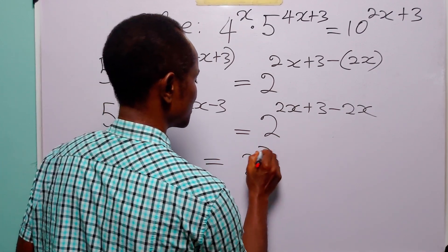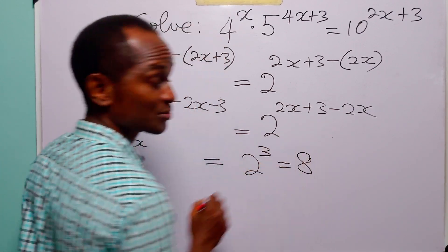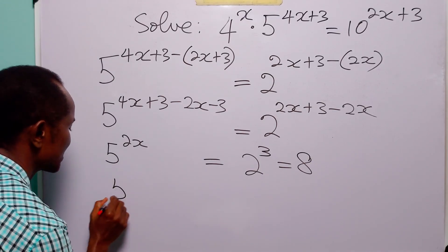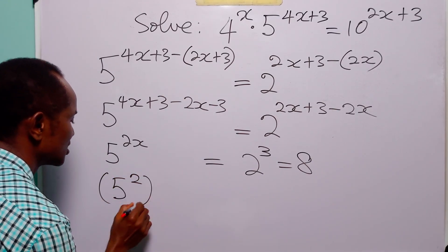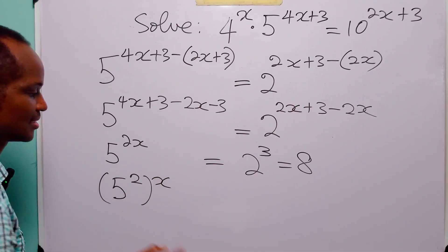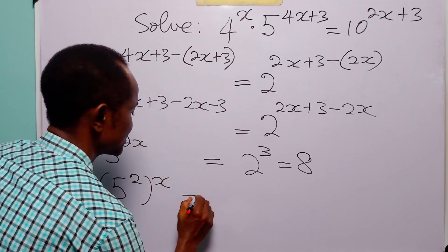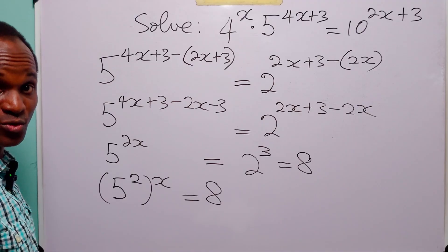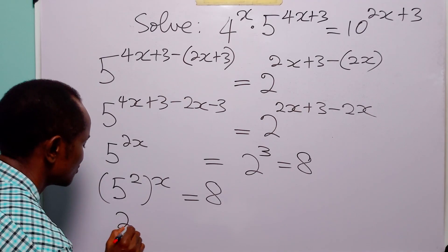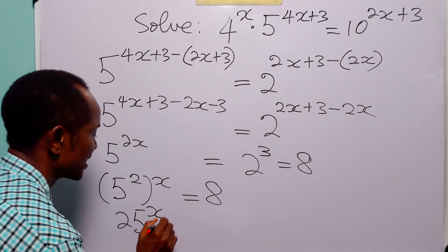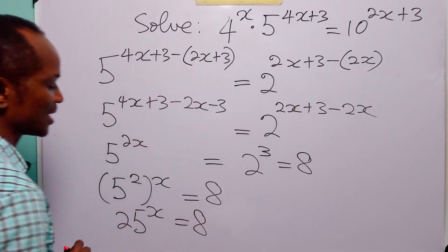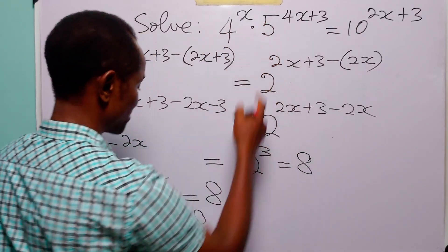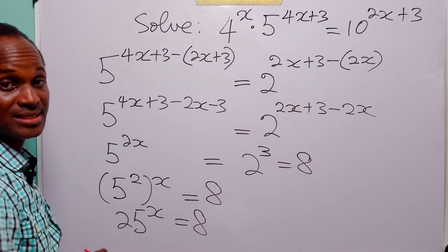So this gives us 2 to the power 3 on the right, which is equal to 8. The left hand side is 5 squared to the power x, and this equals 8. Since 5 squared equals 25, we have 25 to the power x equals 8. The equation has now been reduced to this simpler form.